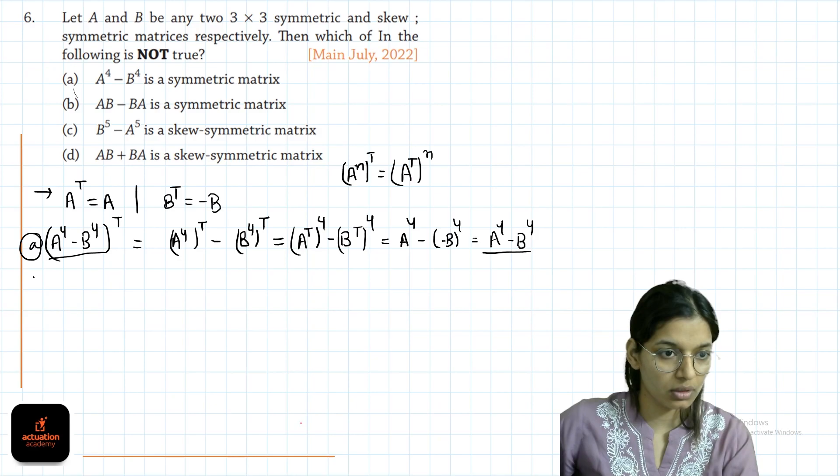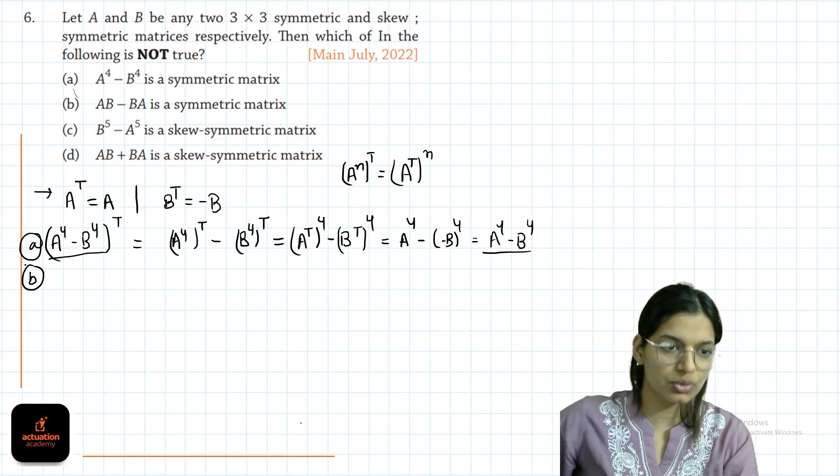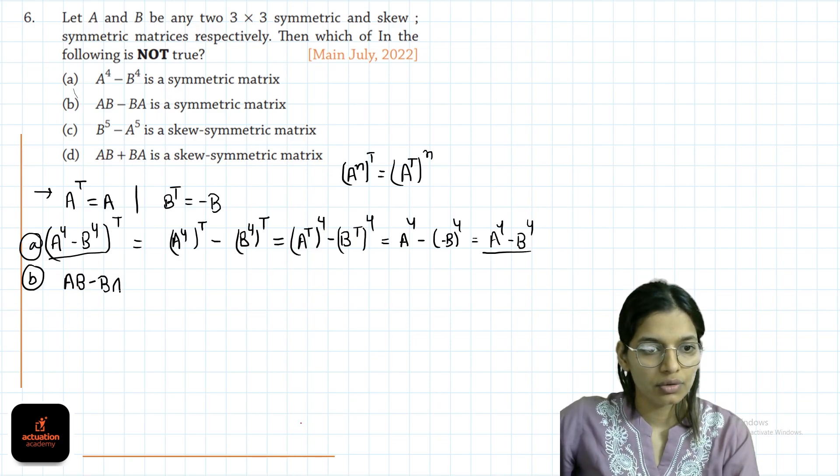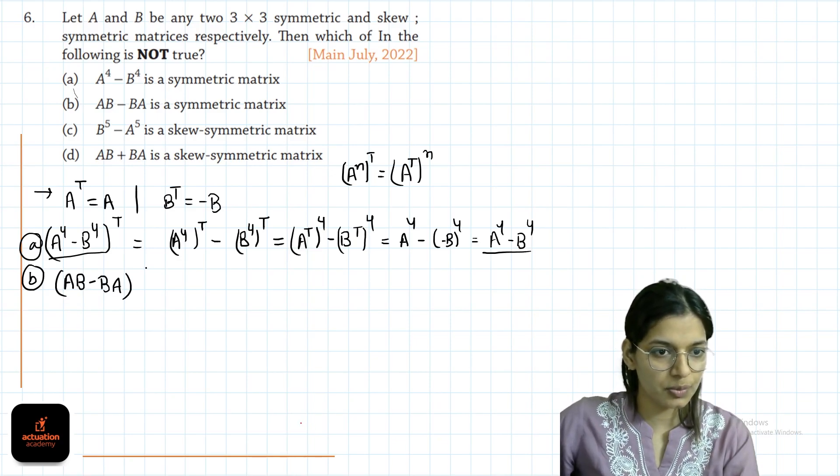So A option is the correct one. But we have to choose incorrect. Let's check B. B is AB minus BA. Again, for skew symmetric we check transpose.